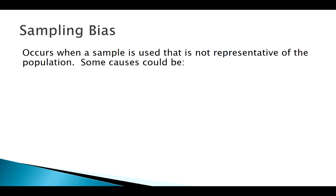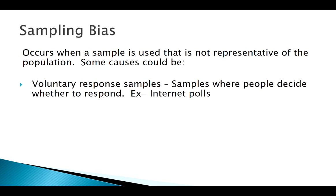One way sampling bias can happen is through a voluntary response sample — just leaving a poll open for anybody to respond to. Why might there be an issue? Typically when something's voluntary, it's the people who feel strongly either way that are going to respond.